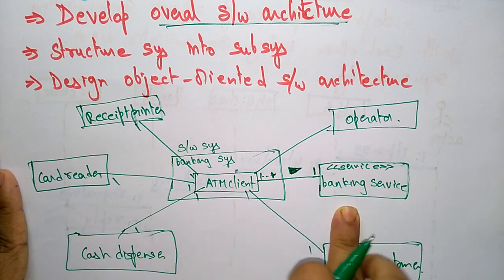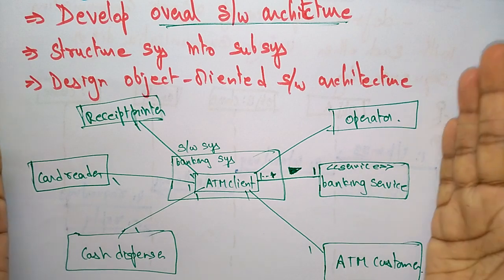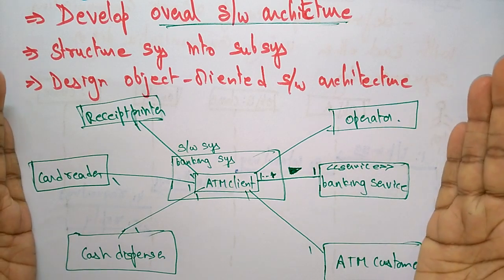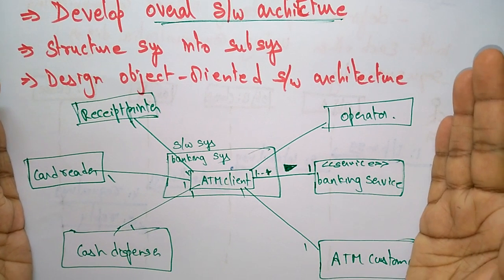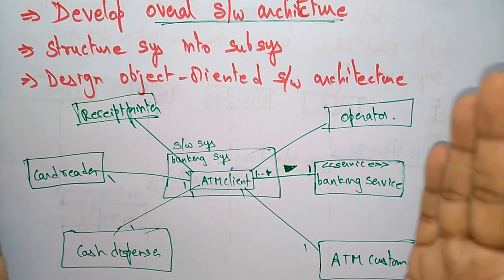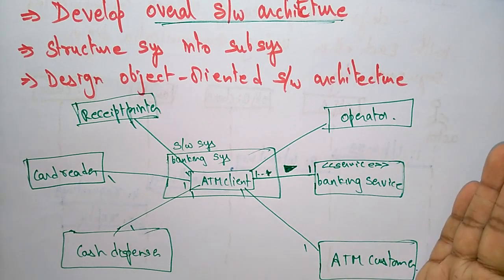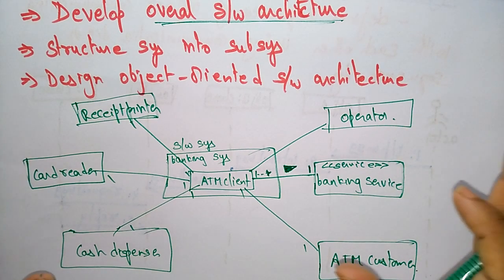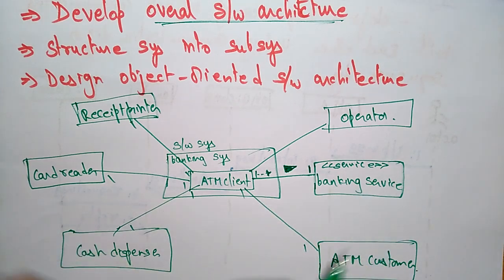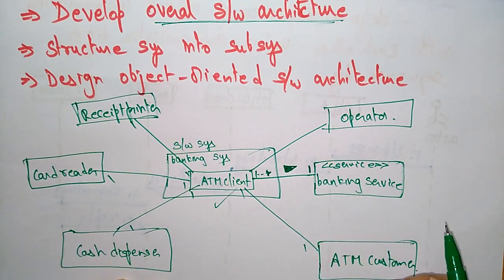The ATM client is requesting the banking service. This is how you design a software system. This is design modeling — you develop the overall software architecture, which here is the ATM client architecture.